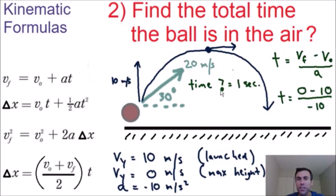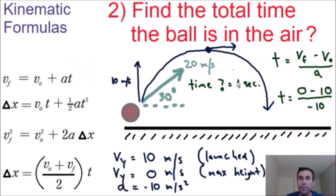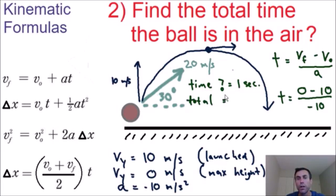But this 1 second is only the time for the ball to travel from the ground to the max height — not the total time. Our total time is exactly double that, because it takes the same amount of time to come back down as it does to reach the max height. So our total time is equal to 2 times 1 second, which equals 2 seconds.